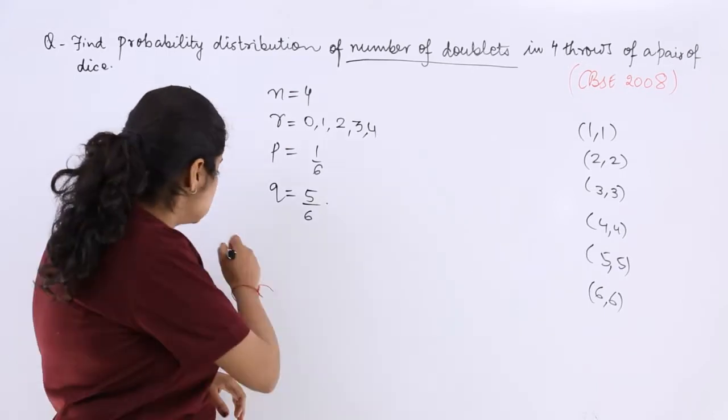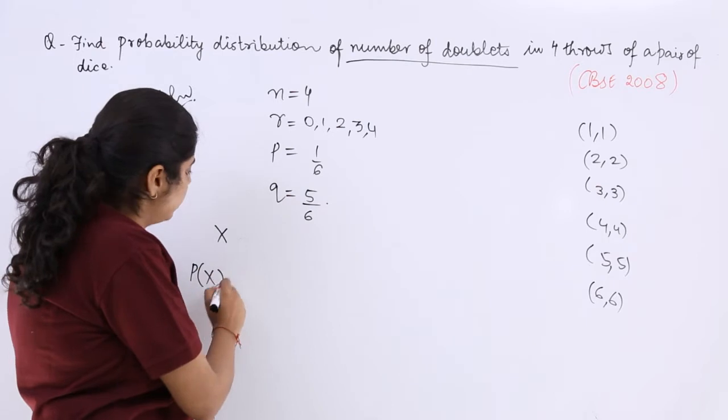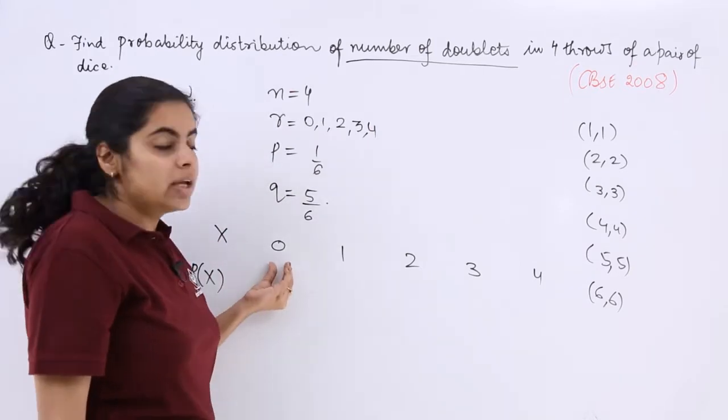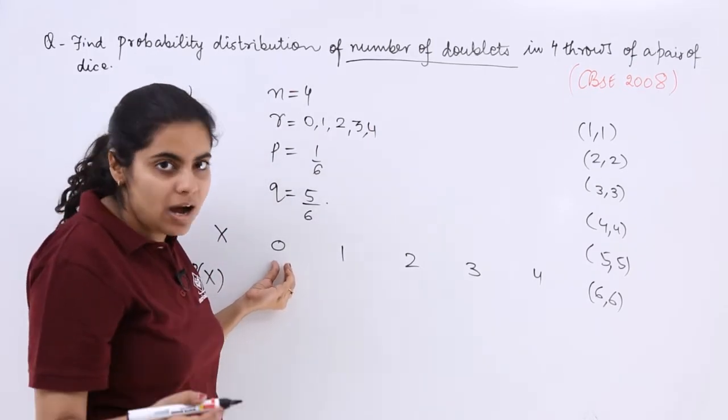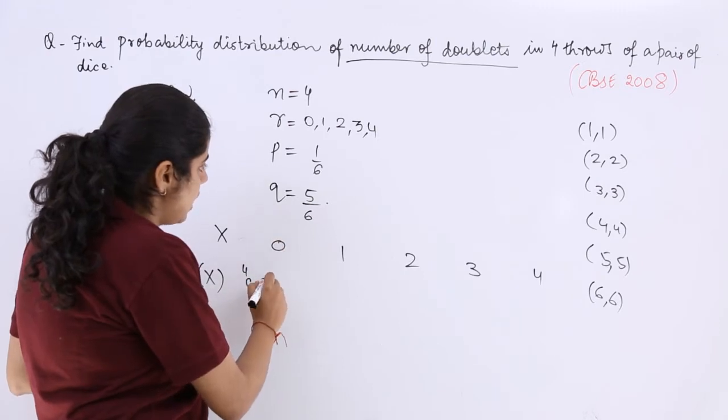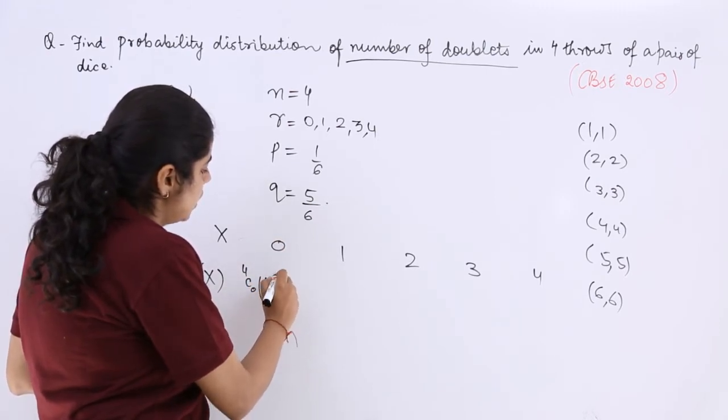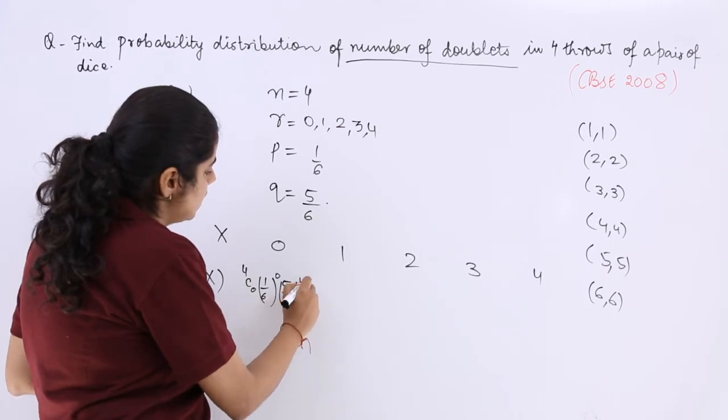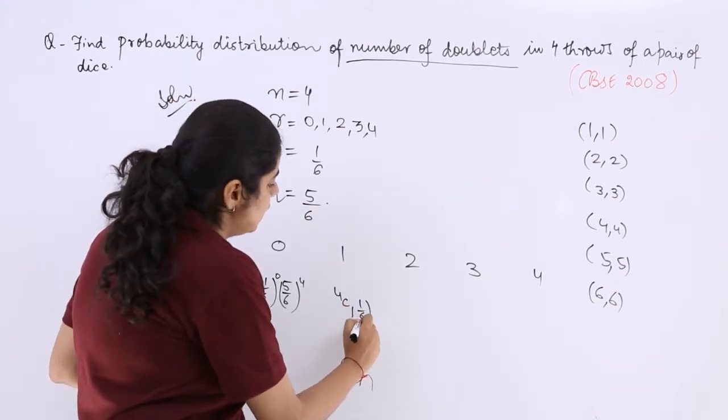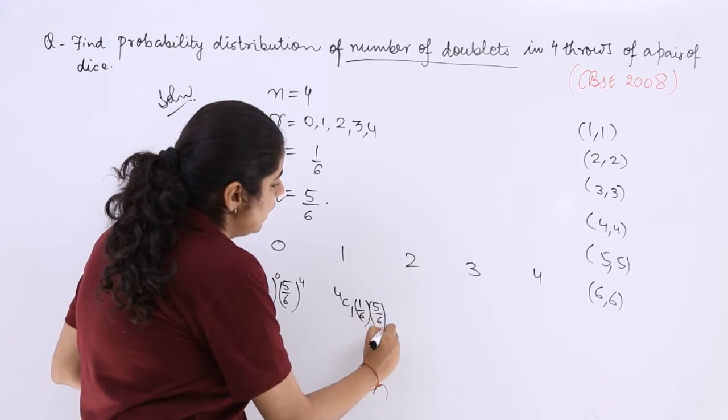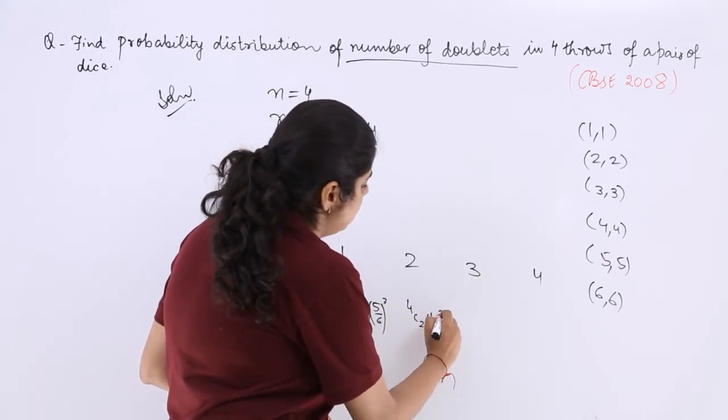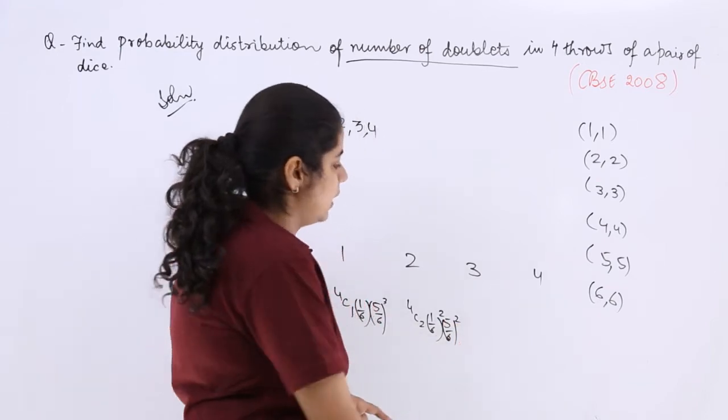Let's start, what are we waiting for. So if I have X and P of X, so X is zero, then one, then two, then three, then four. What about P of X? nCr P raised to the power r Q raised to the power n minus r is the formula. So nCr P raised to the power r Q raised to the power n minus r.